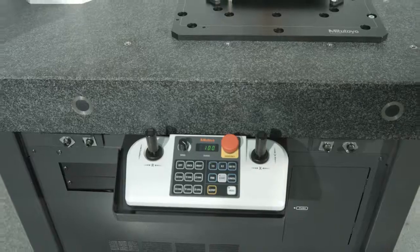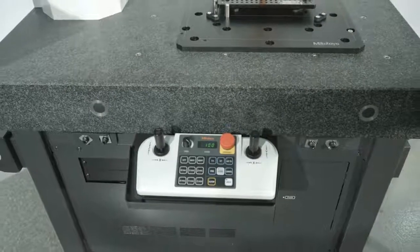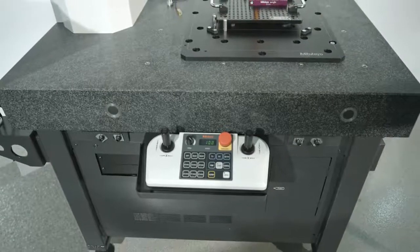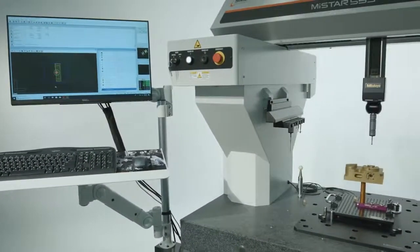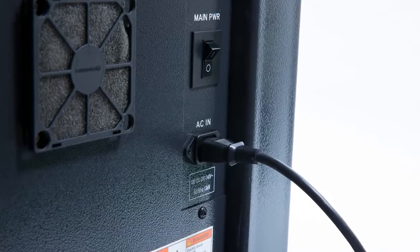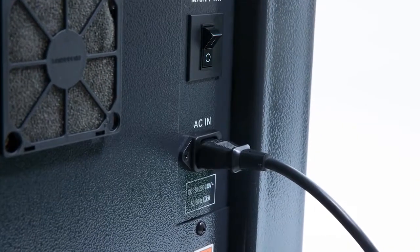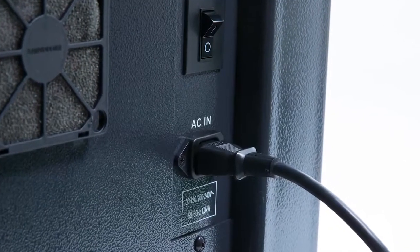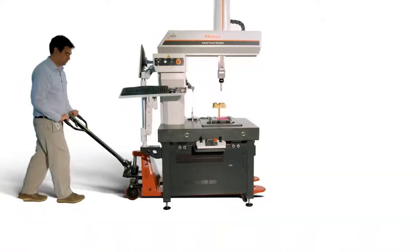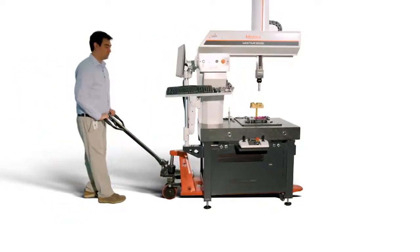The CMM's compact design requires minimal floor space, making the MyStar optimal for in-line or near-line measurements in the smallest of work areas. The MyStar runs on standard 120-volt electrical service and does not require compressed air, allowing for easier, faster setup wherever CMM measurements are needed.